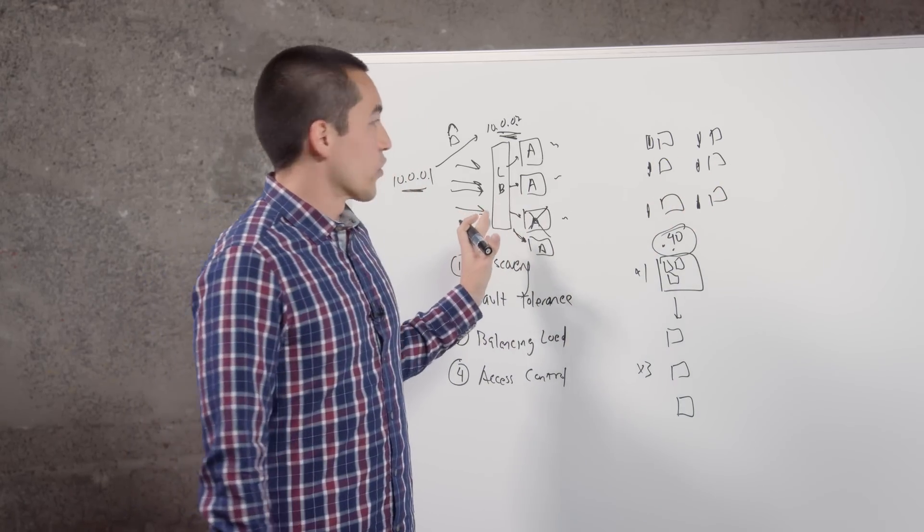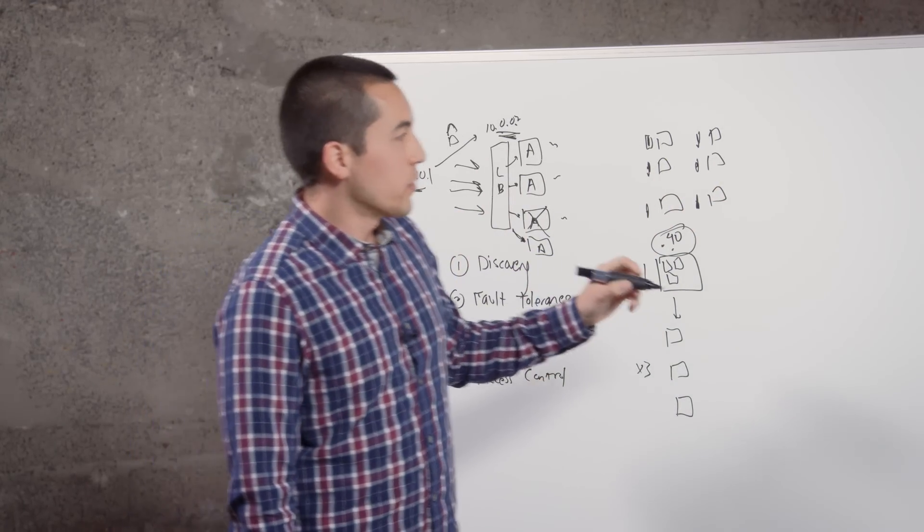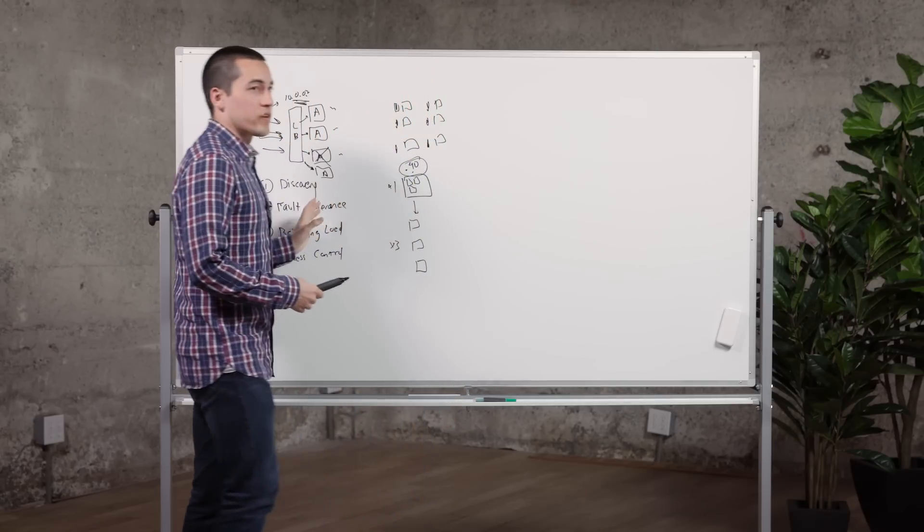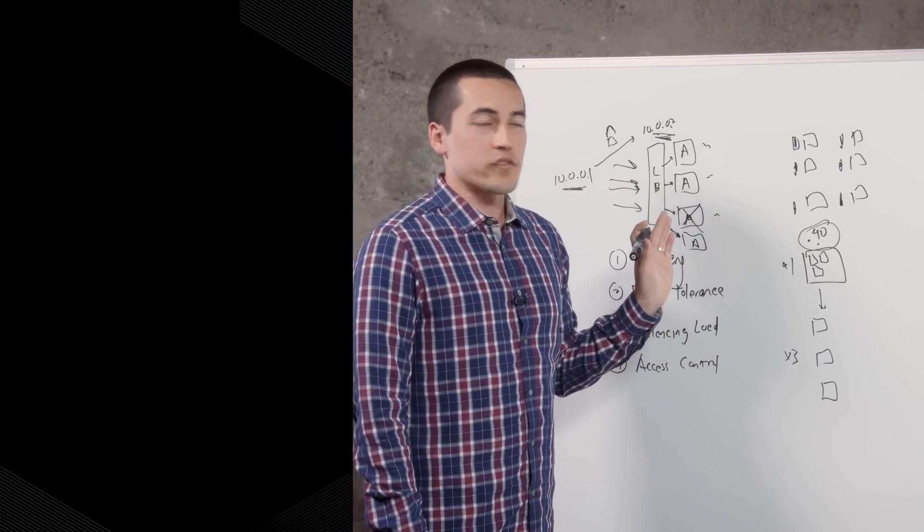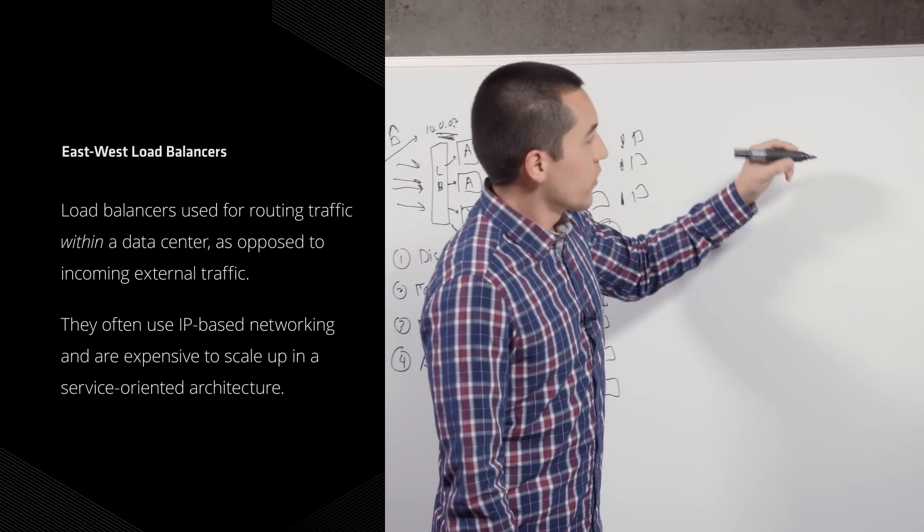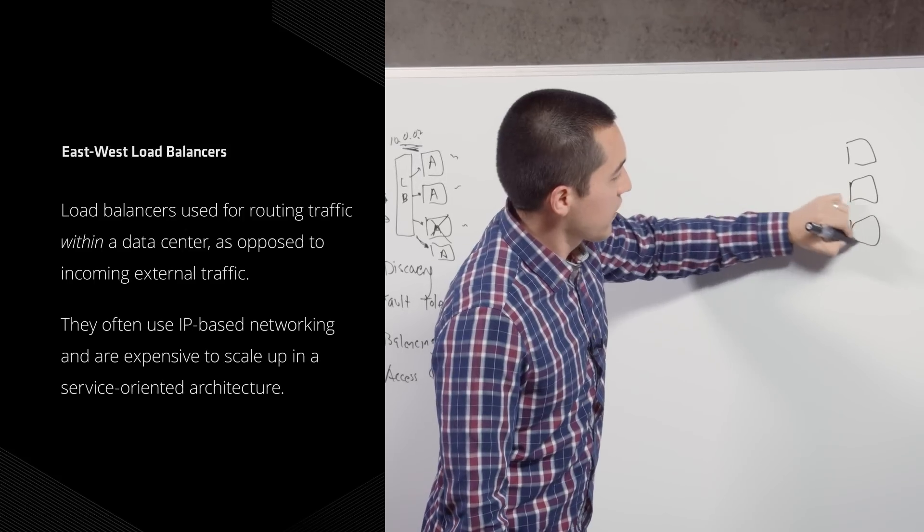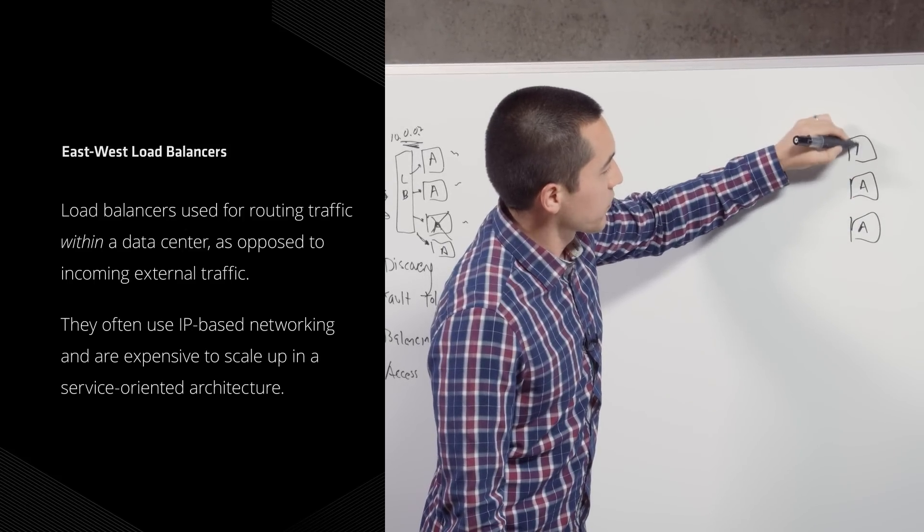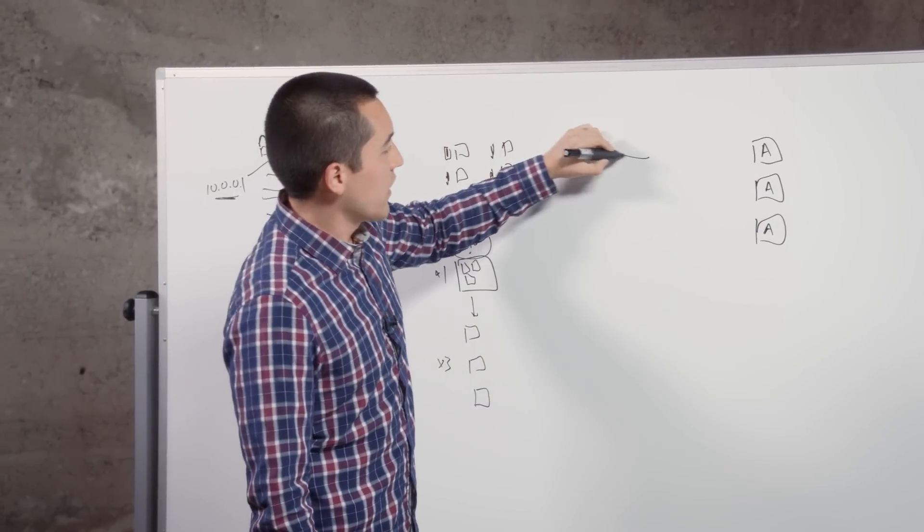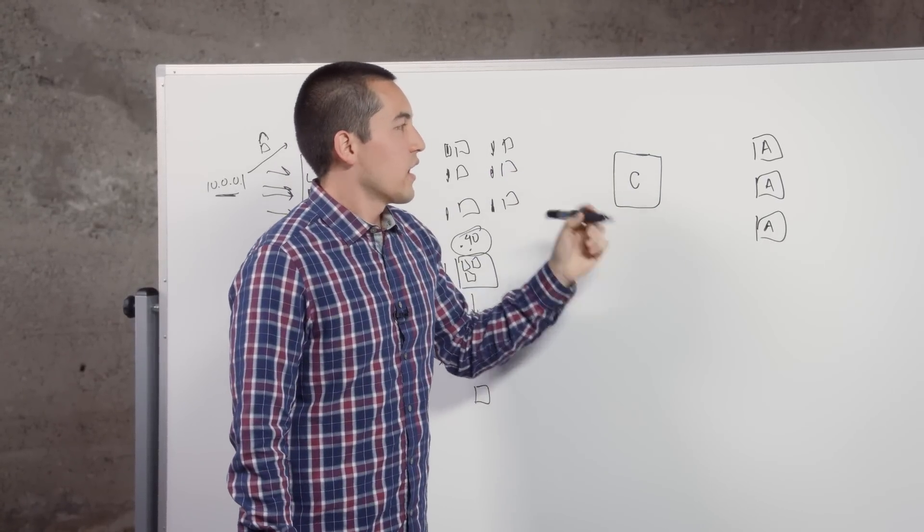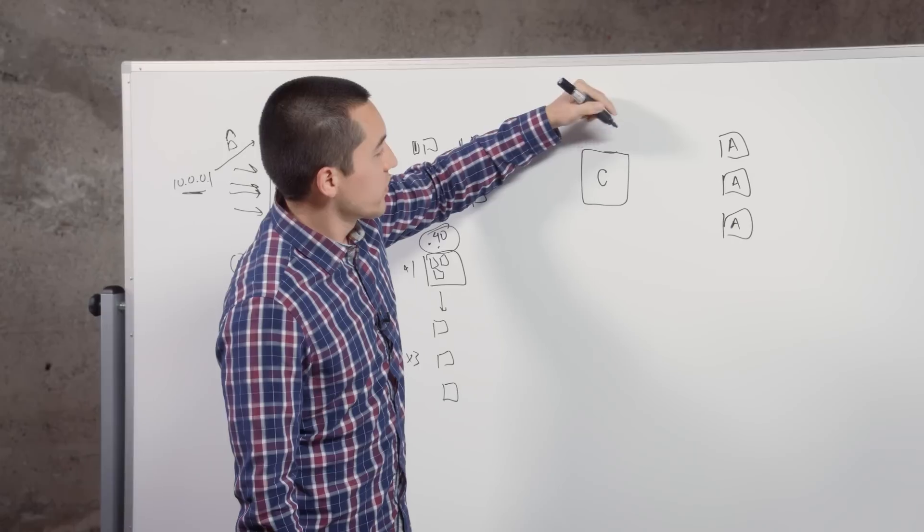So with a tool like Consul you could solve all four of these issues by eliminating the east-west load balancers altogether. In a world with Consul, what you have instead is you still have your services A here just like before, and you have your client accessing them here—let's just call that C for the client.